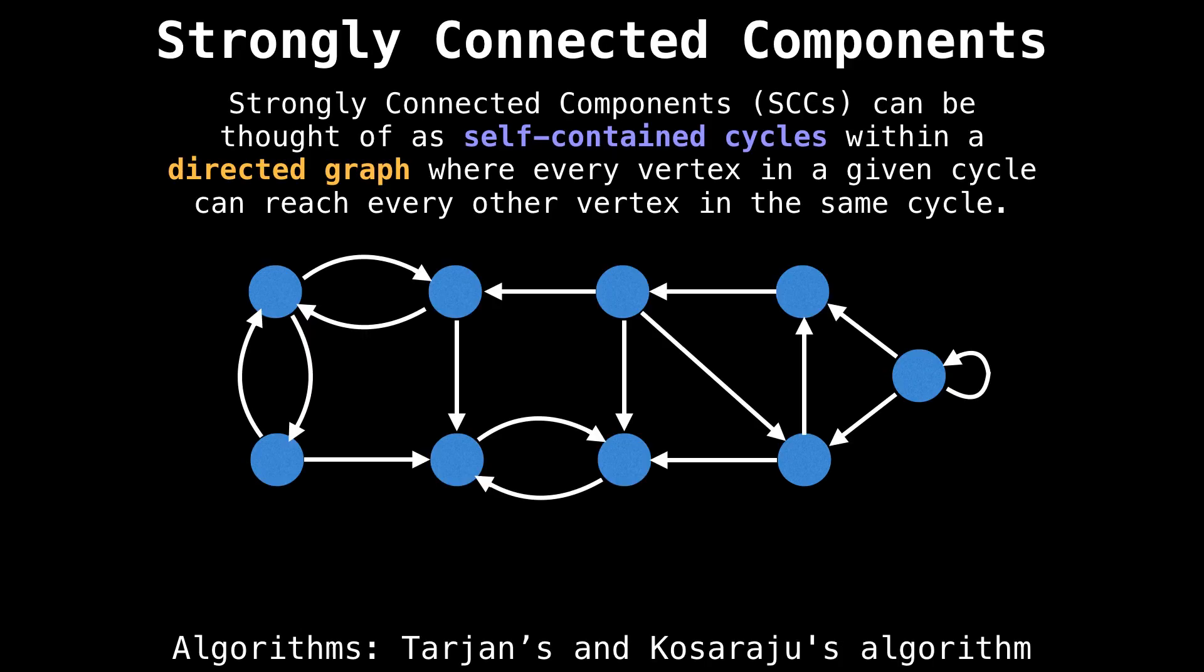Something that comes up now and again is finding strongly connected components within a graph. This is analogous to finding connected components of an undirected graph, but for directed graphs.